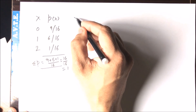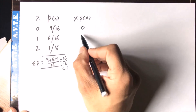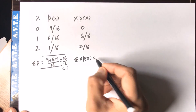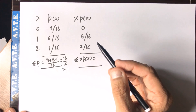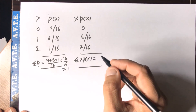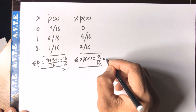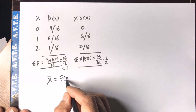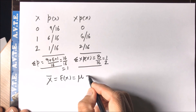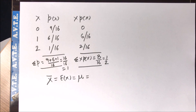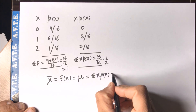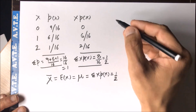Now we compute X·P(X) and sum the corresponding values. The summation of X·P(X) comes out to 8/16, which is 1/2. So the mean — also written as X̄, E(X), or μ — is E(X) = Σ X·P(X) = 1/2.